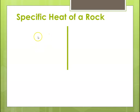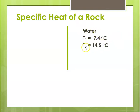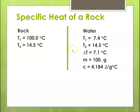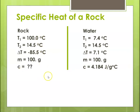Now we look at the heat gained by the water. The initial temperature of the water was 7.4 degrees C; its final temperature when the rock was in the cup was 14.5 degrees C, giving a delta T of 7.1. The mass of the water was 100 grams, and the specific heat C for water is the constant 4.184. For the rock, the initial temperature was 100 degrees C; the final temperature was the same as the water, 14.5 degrees C; delta T was negative 85 (it went from hot to cold, losing energy); and the mass was 100 grams. We will calculate its specific heat C.